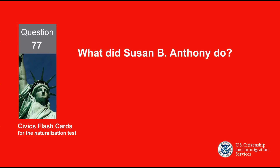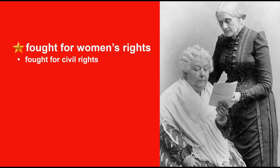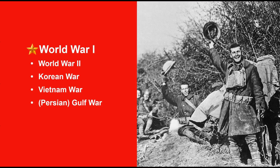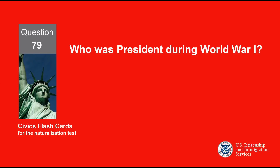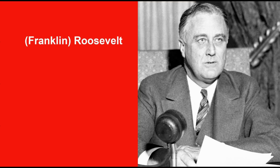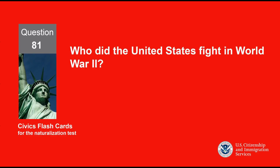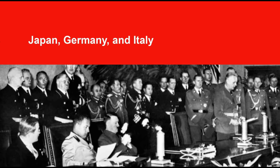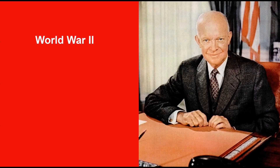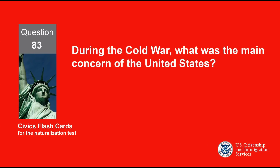What did Susan B. Anthony do? Fought for women's rights. Name one war fought by the United States in the 1900s. World War I. Who was president during World War I? Woodrow Wilson. Who was president during the Great Depression and World War II? Franklin Roosevelt. Who did the United States fight in World War II? Japan, Germany, and Italy. Before he was president, Eisenhower was a general. What war was he in? World War II. During the Cold War, what was the main concern of the United States? Communism.